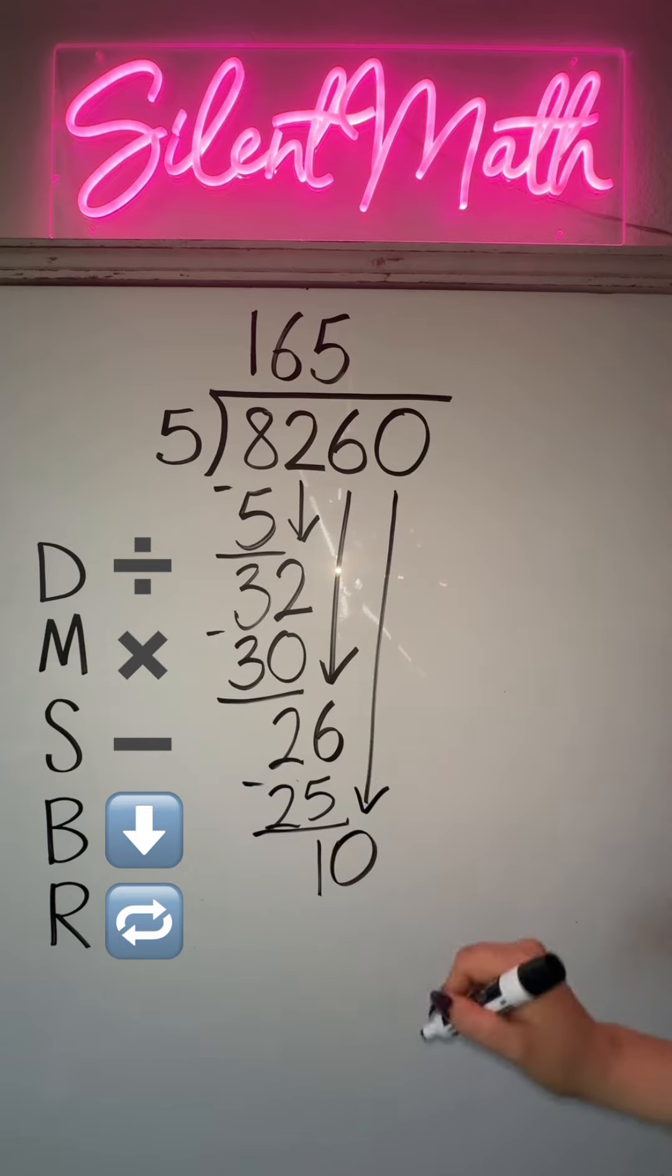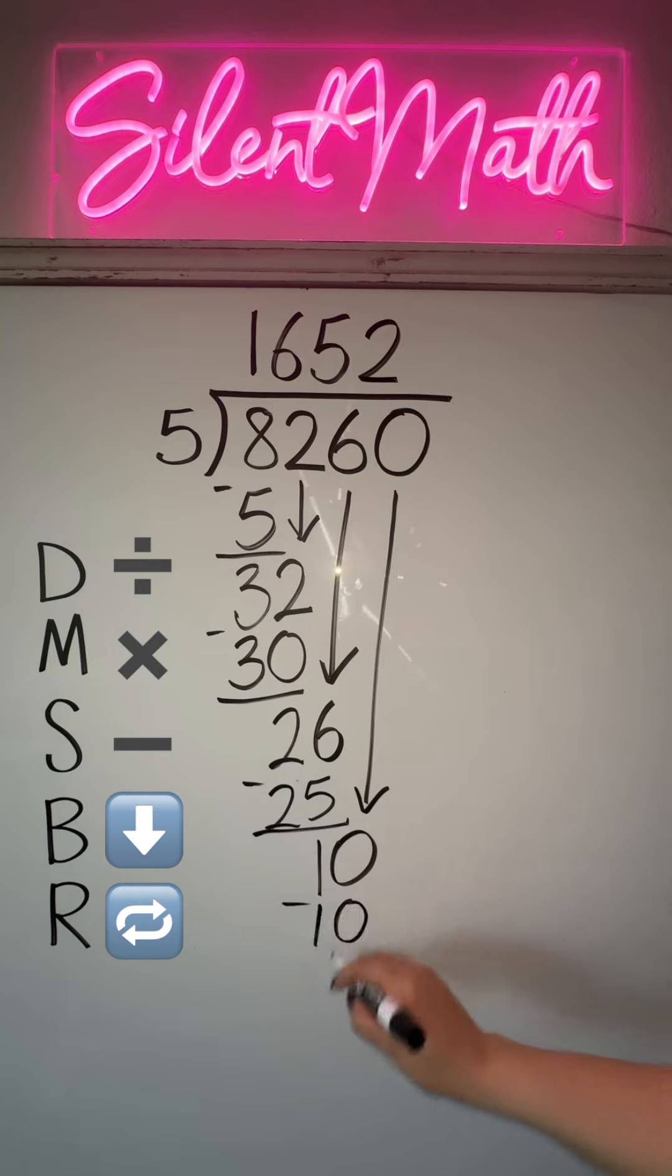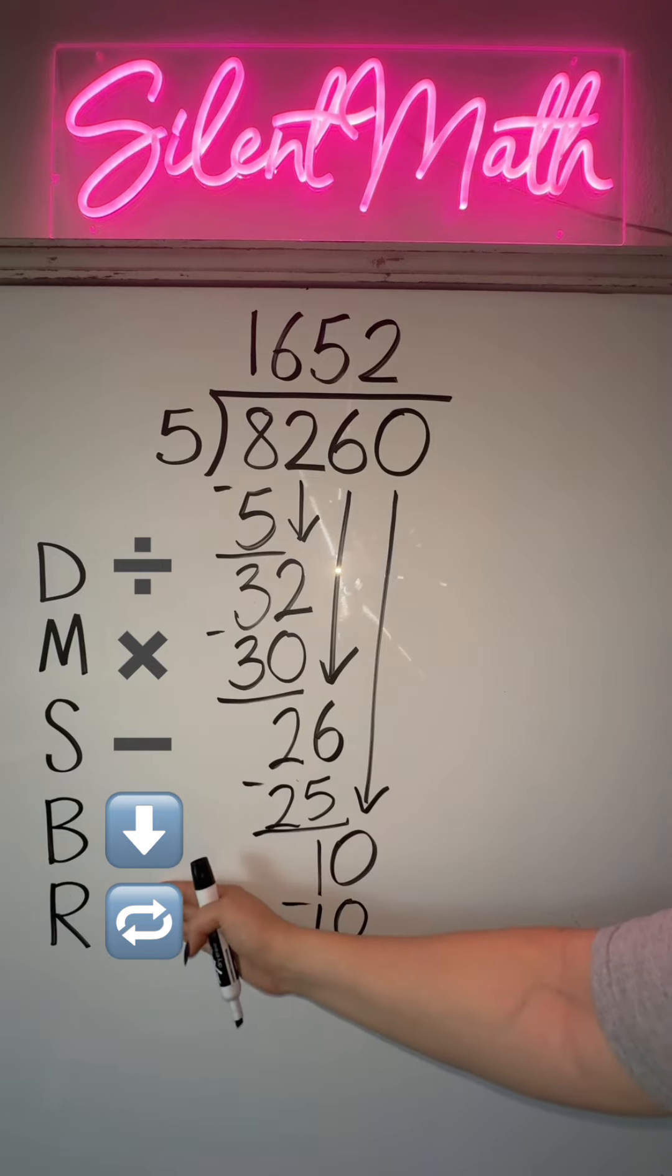We're going to repeat the process one more time. How many groups of 5 can go into 10? Well, that's exactly 2 groups, since 2 groups of 5 is 10. You're going to see that we have a remainder of 0. So the quotient, or the answer to this division problem, is 1,652. DMSB will never fail you, so remember to use it the next time you need to divide.